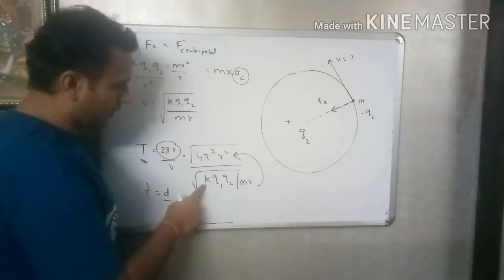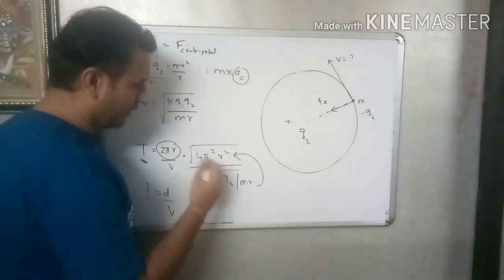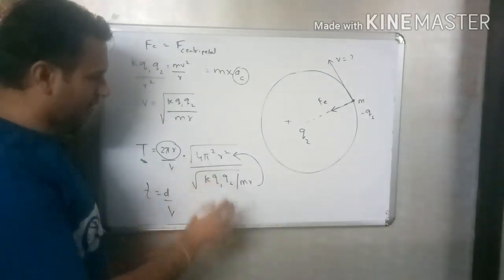k equals 1 over 4 pi epsilon 0, then we can solve it. Then we can get the answer.